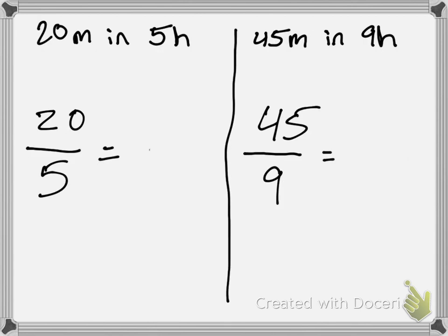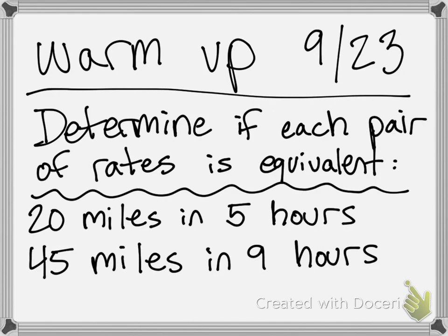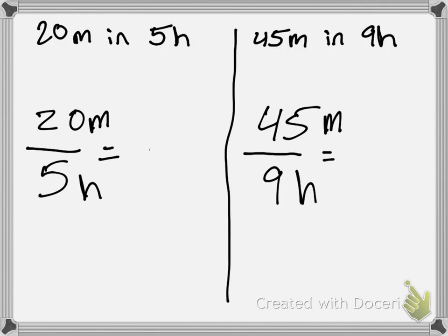Okay, so first of all, we set this up: 20 miles in 5 hours, 45 miles in 9 hours. I think that's what the question was. So how do we simplify this? We want to get it to unit rates.